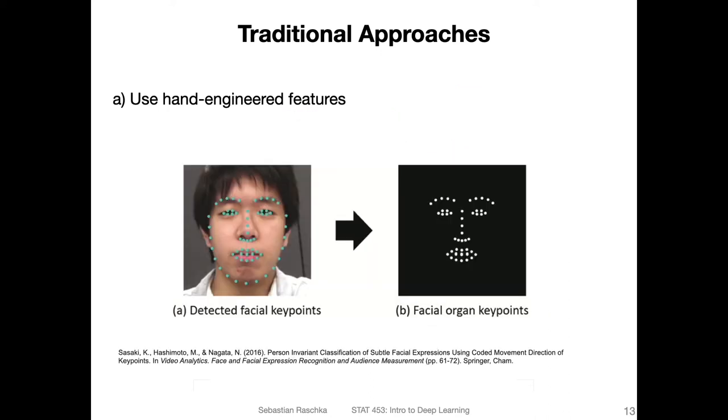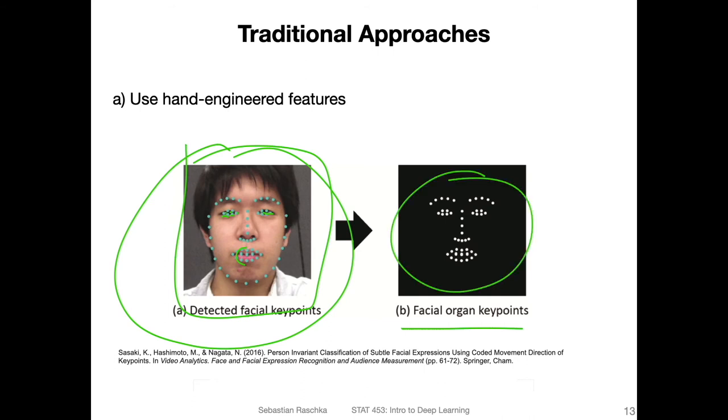Another traditional approach would be, for instance, for face images, to extract these facial landmarks. That is also a traditional technique where people, instead of when they did face recognition provided the full images as input, they would develop an algorithm that maps these points to the eyes, the nose and the mouth, and then do a comparison based on these facial key points. That's another hand-engineered feature technique.